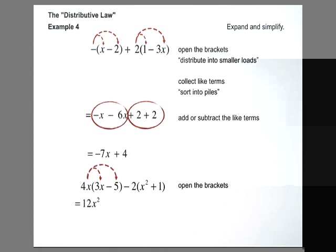4x times negative 5, negative 20x. 4 times negative 5 is negative 20. And I have the x. Negative 2 times x squared is negative 2x squared. And negative 2 times 1 is negative 2.